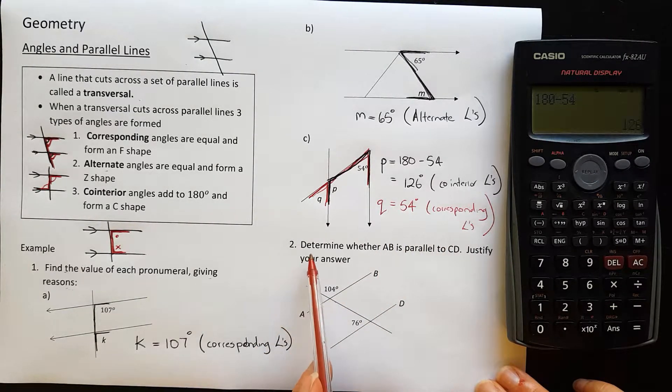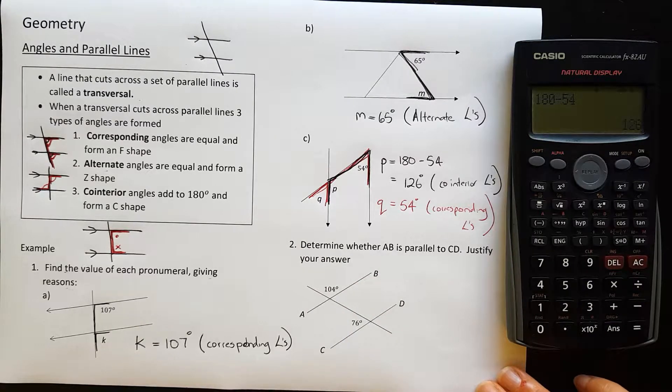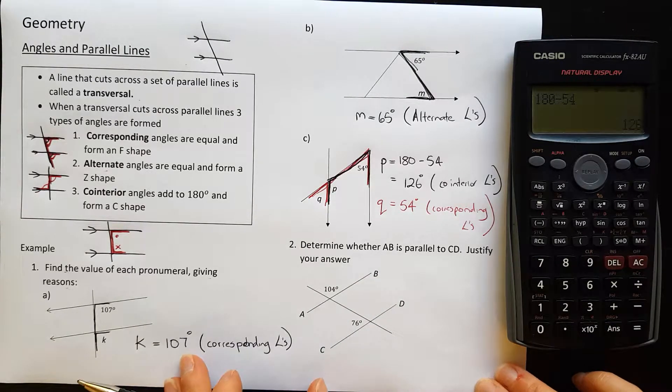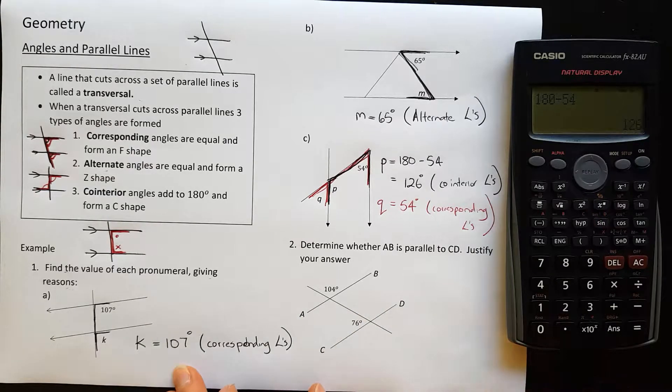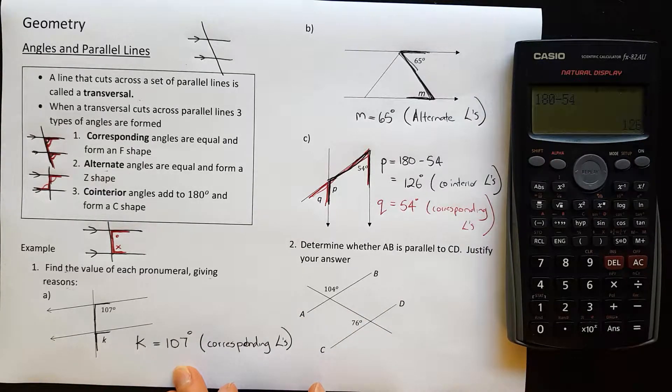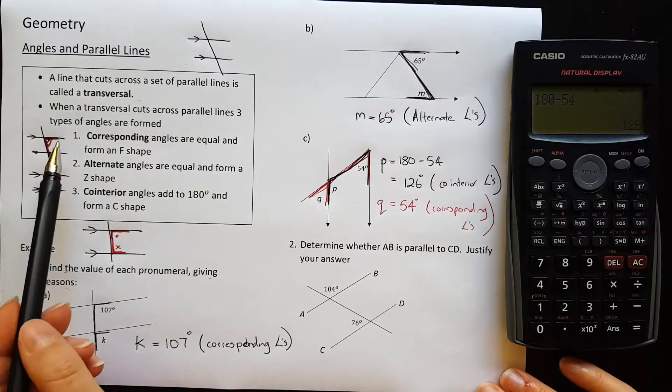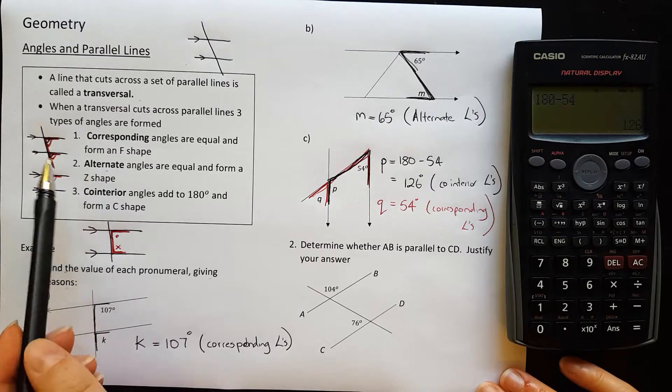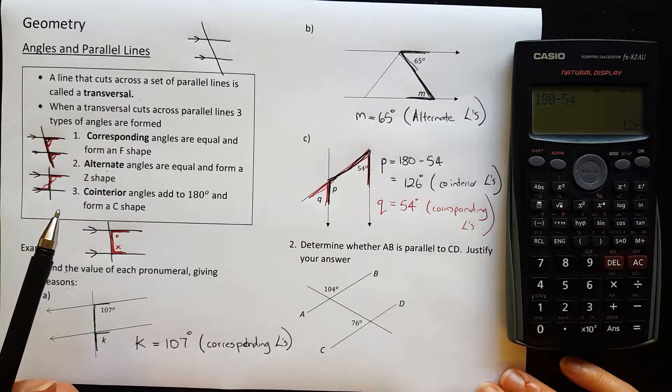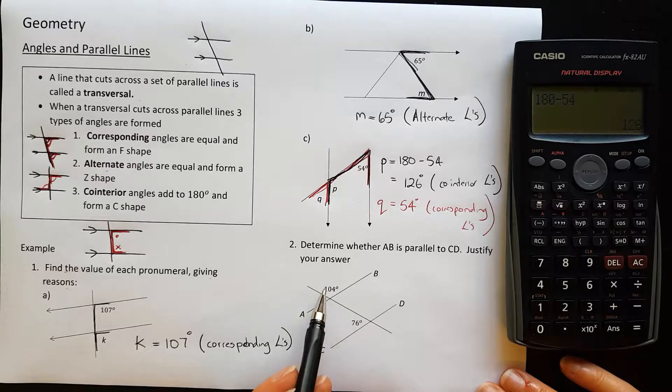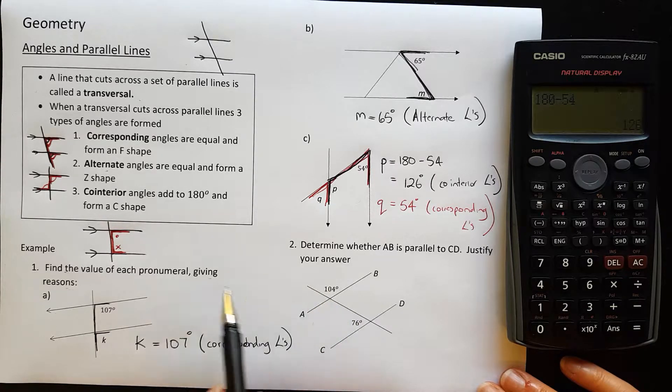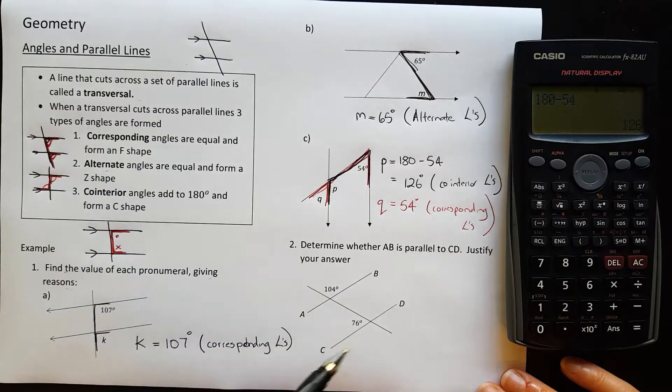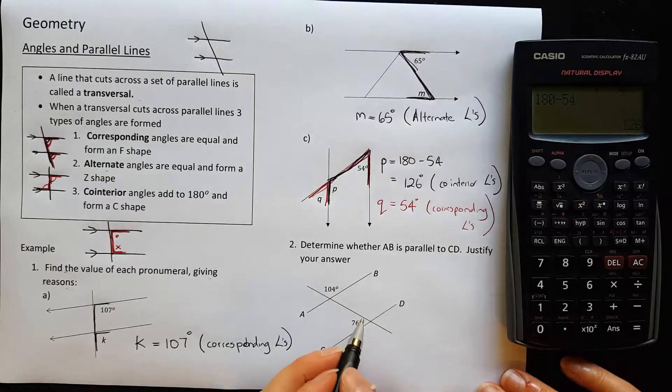Question two. Determine whether AB is parallel to CD. Justify your answer. Now it looks like AB and CD are parallel, but we're trying to work out whether they are actually parallel or not. Now if they're parallel, it would mean that we would be able to see some of these angles being equal like they're meant to be. For example, at the moment the two angles that I'm given don't form an F, a Z, or a C shape. But what if I used my supplementary rule here to find this angle in here.